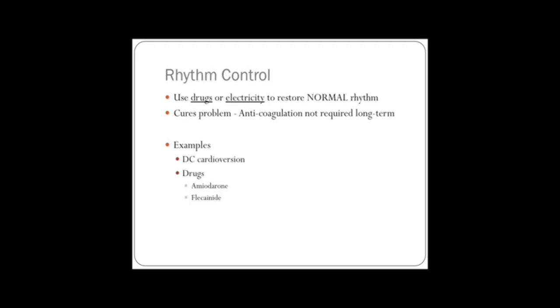Now, rhythm control is a bit better, because we actually cure the problem. So we stop the atria fibrillating. And therefore we don't need anticoagulation. And to do that, we either use drugs or use electricity. Just like with those tachycardias, the supraventricular tachycardias, we can do DC cardioversion, or we can use drugs. And the two drugs here are amiodarone and flecainide. Those are the two most important drugs.